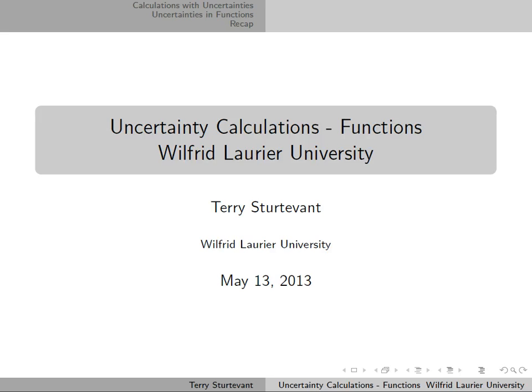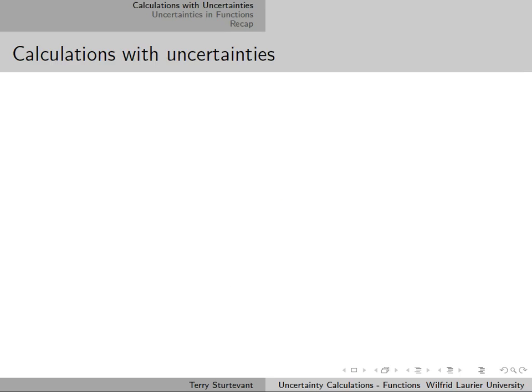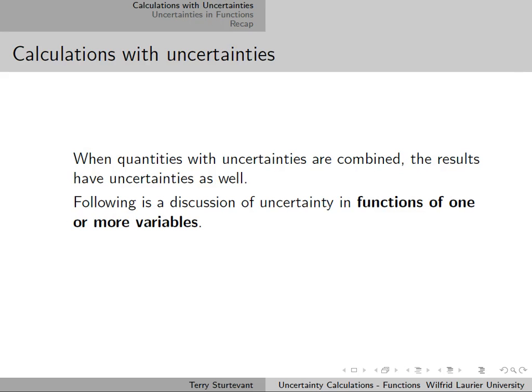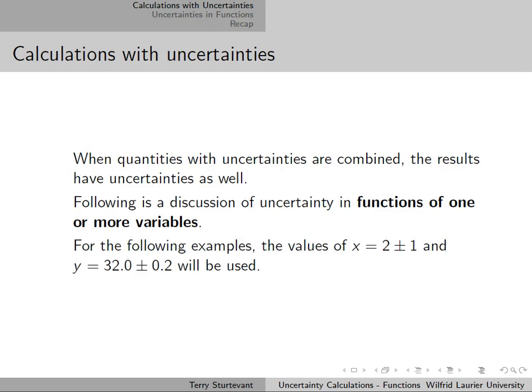This document is about uncertainty calculations with functions. When quantities with uncertainties are combined, the results also have uncertainties. This is a discussion of uncertainty in functions of one or more variables. The examples will only use one variable, but it is easily extended to several.